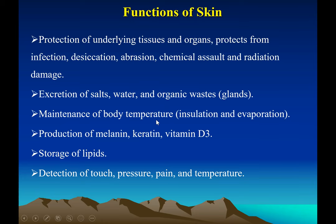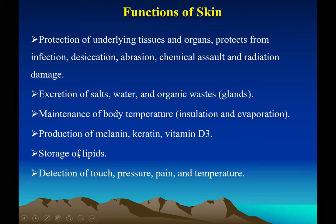Skin plays a huge role in maintaining our body temperature, thereby insulating our body. It also makes melanin, which protects us from UV light. Keratin provides waterproofing, and the skin can make vitamin D3. The adipose tissue in the skin is a place for storing lipids, so it can be a source of energy. We also perceive our environment through our skin — we are able to detect touch, pressure, pain, and temperature because we have receptors for them in the skin.